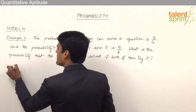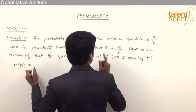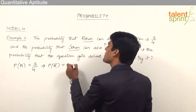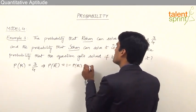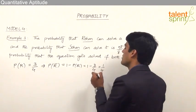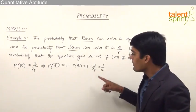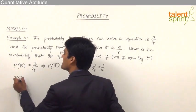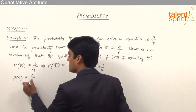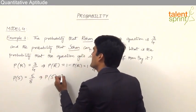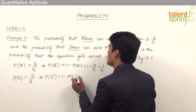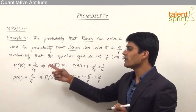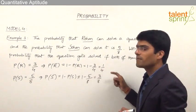The probability of Rohan being successful is 3 by 4. From this we can say that the probability of Rohan's failure is 1 minus probability of Rohan's success, that is 1 minus 3 by 4, which comes out to be 1 by 4. Likewise, the probability of Sohan's success is 5 by 8, so the probability of Sohan's failure is 1 minus 5 by 8, which comes out to be 3 by 8.